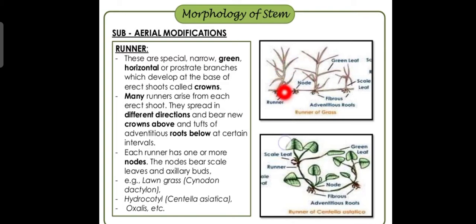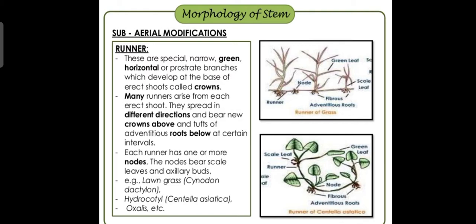At regular intervals, a node is present with fibrous adventitious roots. At the terminal or bud point of the erect shoot, roots grow at different intervals. Each runner has one or more nodes. These nodes bear scaly leaves. Axillary buds are also present — the buds found between branches and the stem.